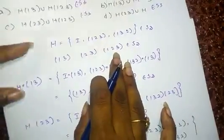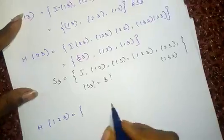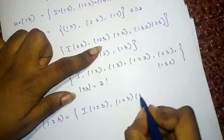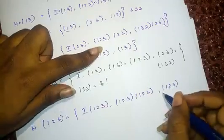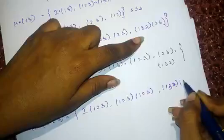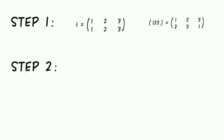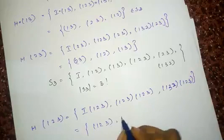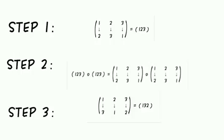Now we will find the right coset of (1 2 3) and H. H composed with (1 2 3) is equal to I followed by (1 2 3), which gives (1 2 3); then (1 2 3) followed by (1 2 3), sorry it is (1 3 2); and (1 3 2) followed by (1 2 3), which gives I.